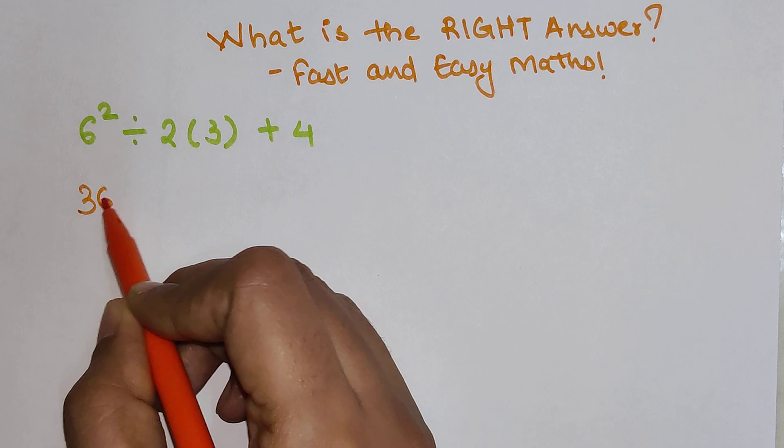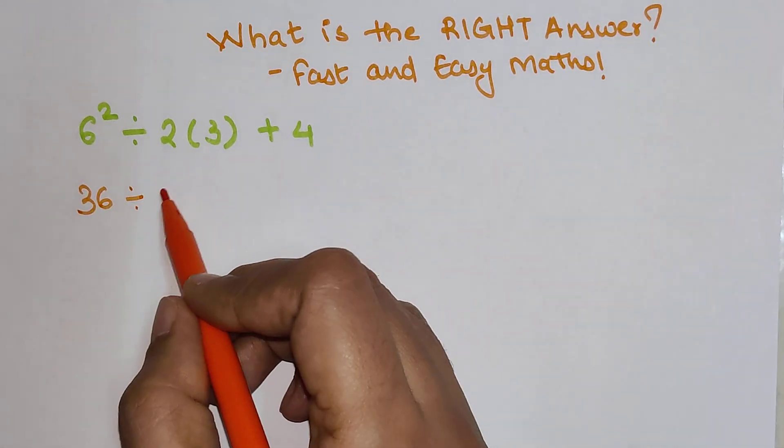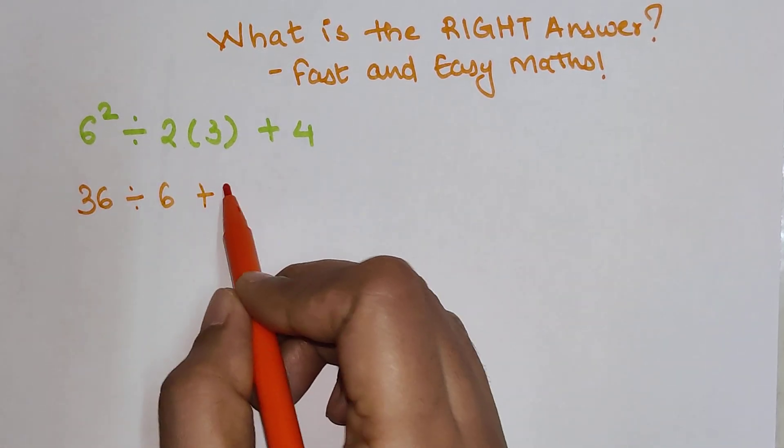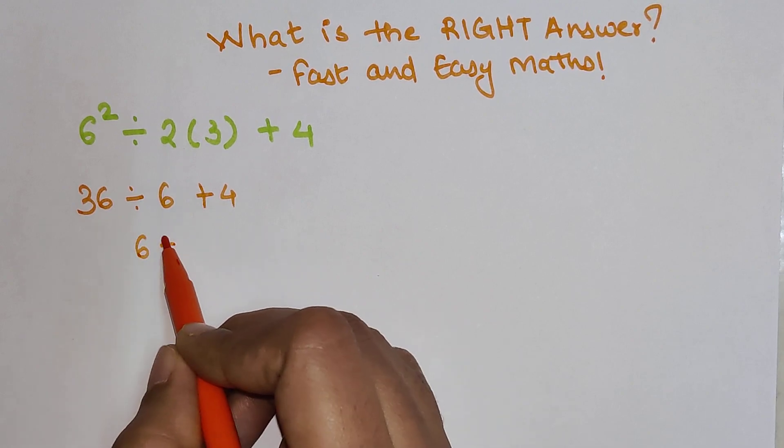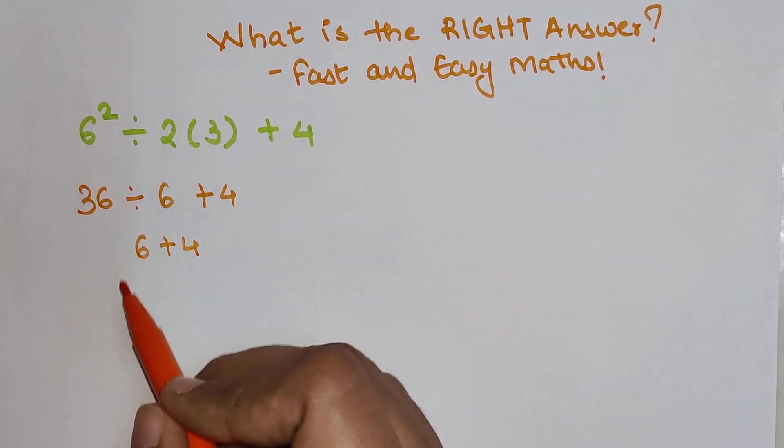Now see, there are a lot of students who normally do this: 36 divided by 6 plus 4. And many of you got the answer as 6 plus 4, because 36 divided by 6 gets you 6.